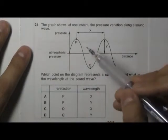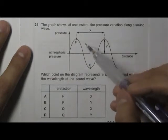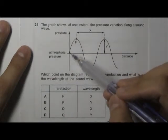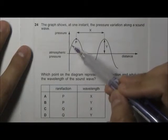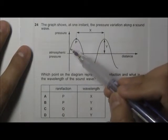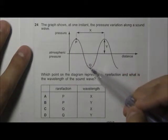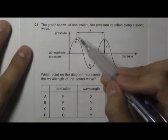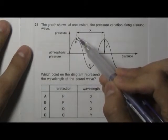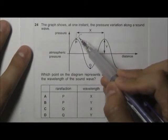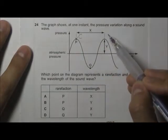Alright, we have a pressure distance graph of a sound wave. So we can see that the pressure actually increases from atmospheric pressure to a point that is higher than atmospheric pressure. And then it goes down to a point that is lower than atmospheric pressure. So we can see that this highest point, highest pressure, it should be the compression, center of compression.